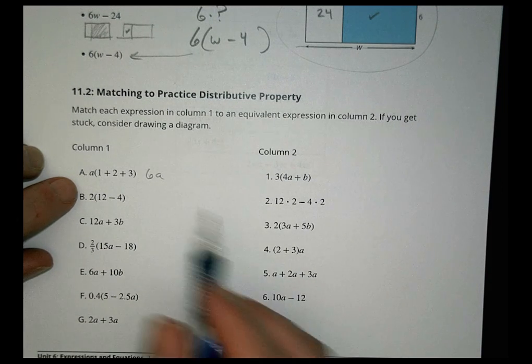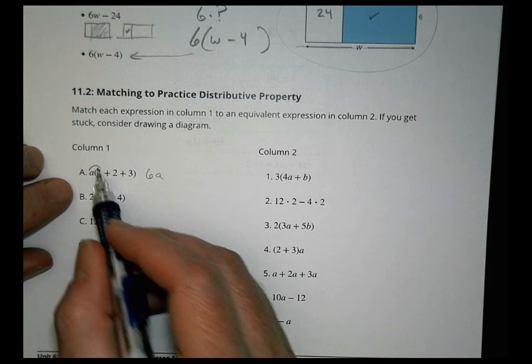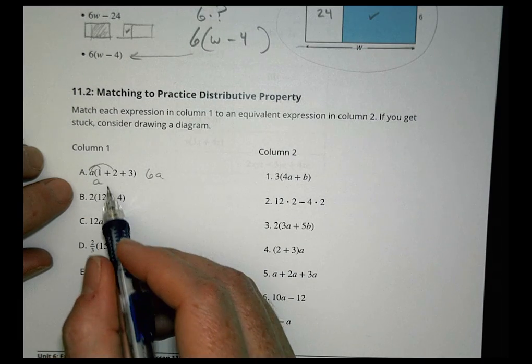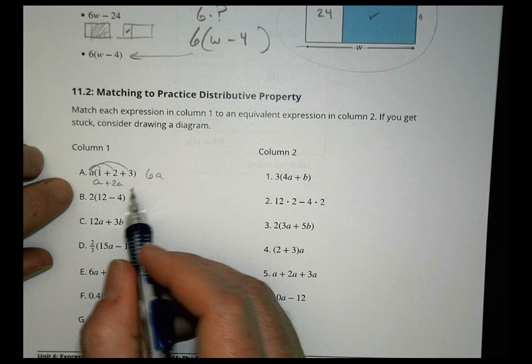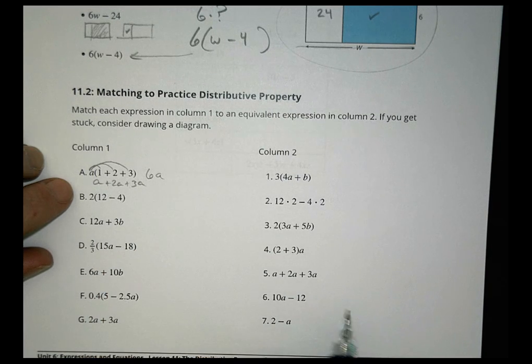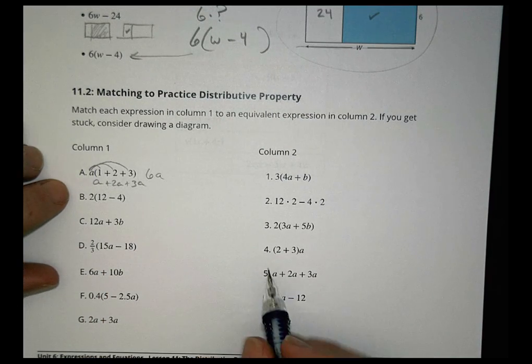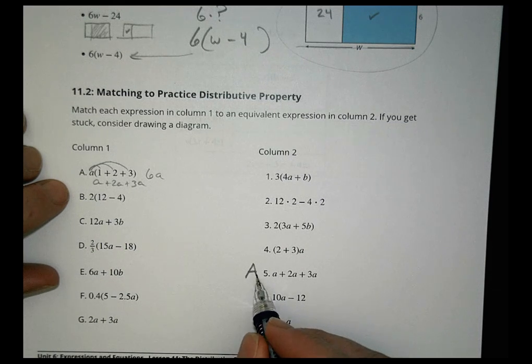What if we distribute each one? a times 1 is a, a times 2 is 2a, and a times 3 is 3a. And sure enough, there it is right there. So a goes with this one.